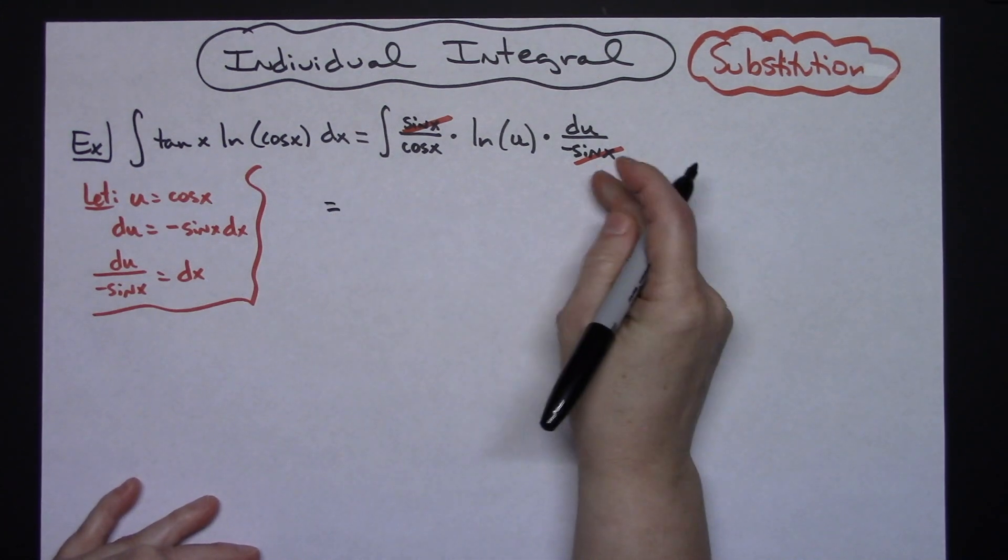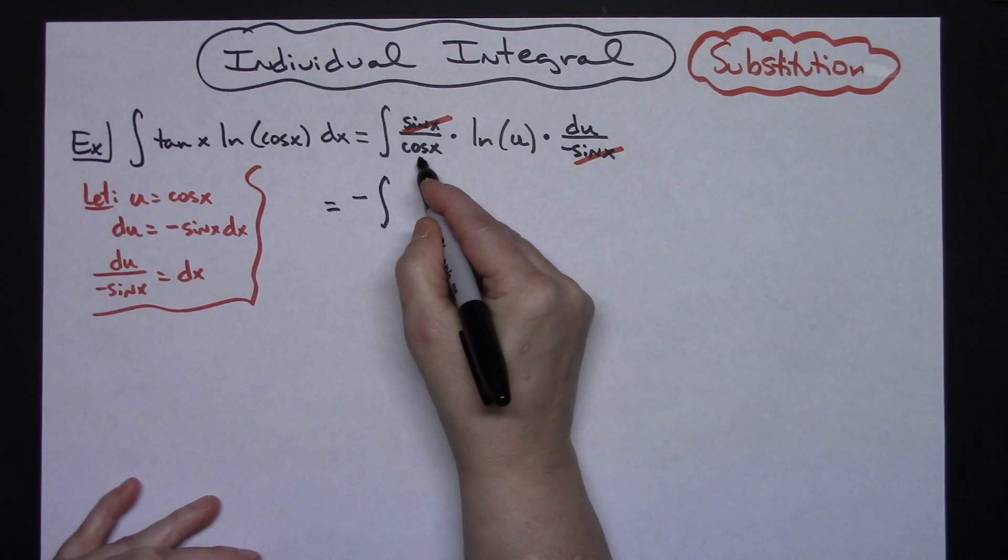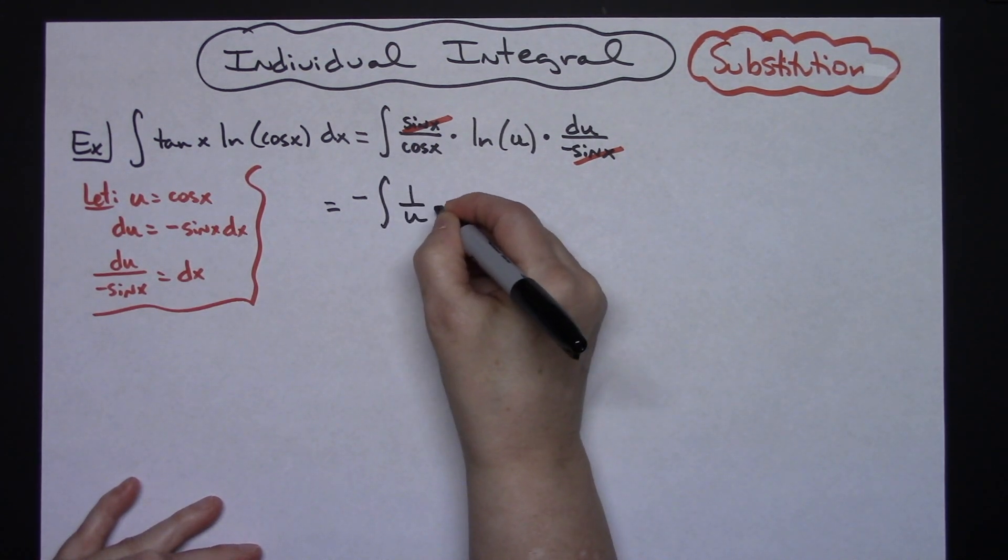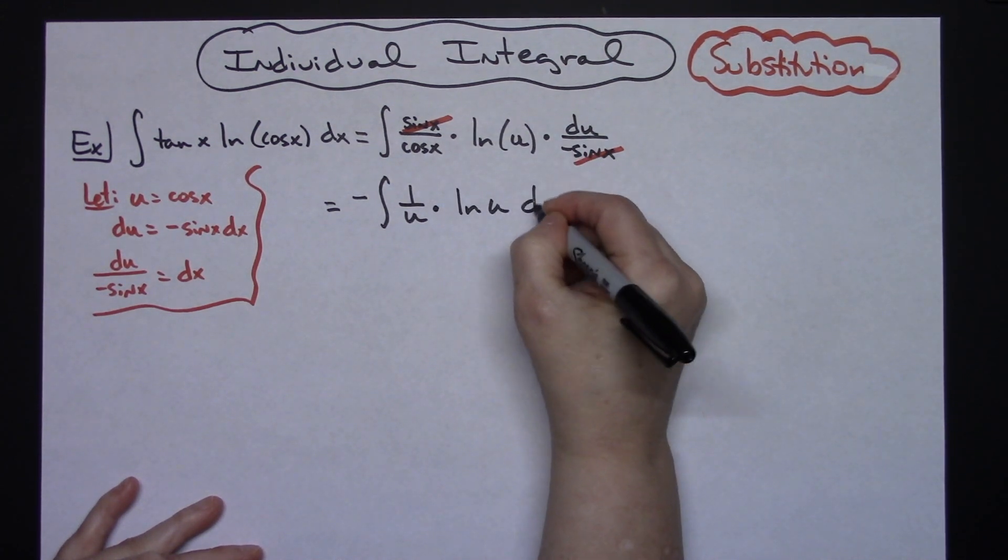Alright, so let's pull this out. Let's take the negative out. Then I'll have the integral. Alright, if I replace that with a u, then I'm going to have one over u right there. Alright, I'm going to have a natural log of u and then the du.